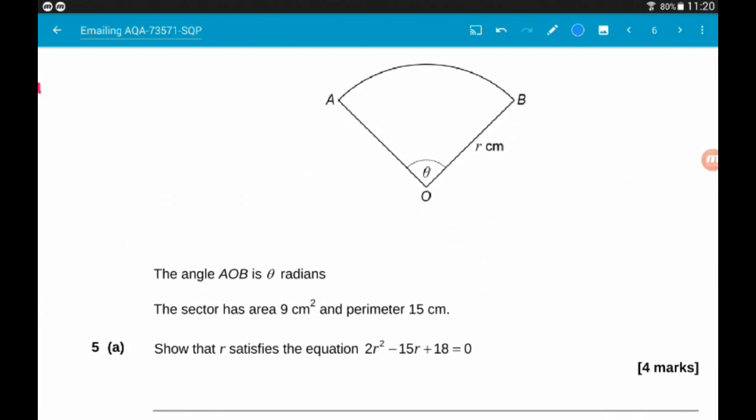We are told the angle AOB is θ radians. The sector has an area of 9 centimeters squared and perimeter of 15 centimeters.